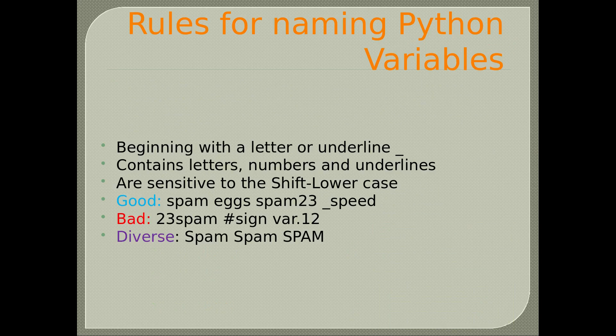Rules for naming Python variables: it may begin with a letter or underscore. It should not begin with numbers or special characters. It may contain letters, numbers, and underscores. They are case-sensitive. Good examples are spam, x, spam23, underscore_speed. Bad examples are 23spam, number sign, or var.12.